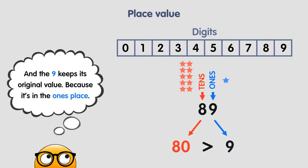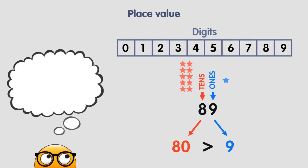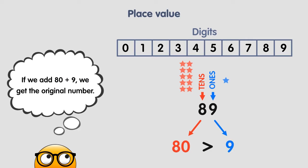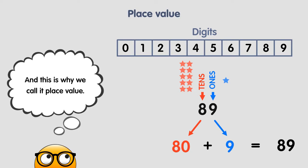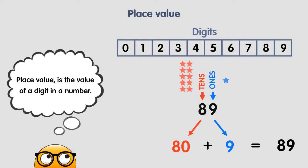And the 9 keeps its original value because it's in the 1's place. Digits in the 1's place keep the same value. If we add 80 plus 9, we get the original number. And this is why we call it place value — place value is the value of a digit in a number.